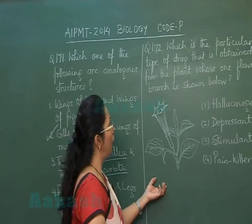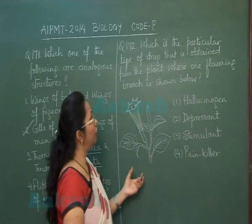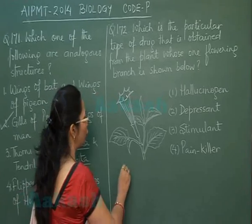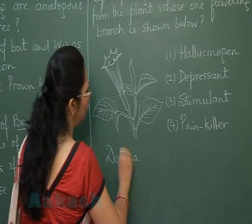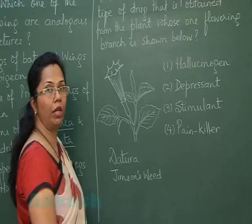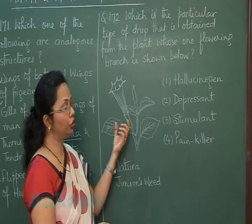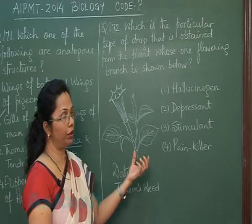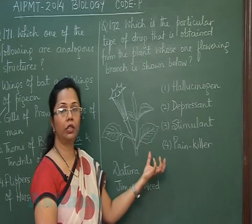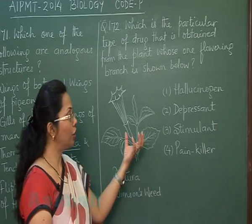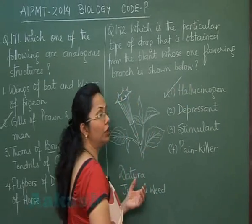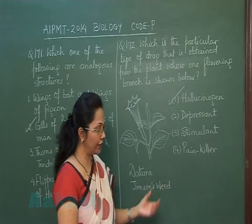Question 172 asks which type of drug is obtained from the plant whose flowering branch is shown. The flowering branch is of Datura, also called jimsonweed, belonging to family Solanaceae. The drug obtained from it has hallucinogenic properties — a person taking it sees objects that are not present or hears sounds that are not there. So the answer is hallucinogen. Moving on to question 173.